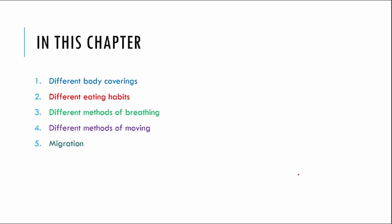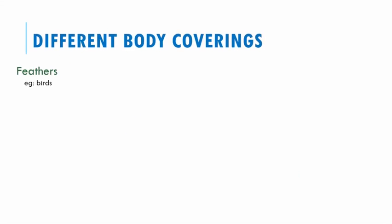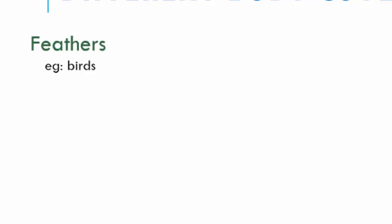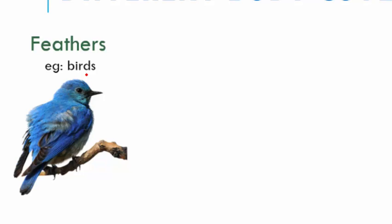Let's start with the first one, which is different body coverings. Now when you look at different body coverings, can you think of what all could be the different body coverings that animals have? The first one would be feathers. Can you think of anything that can have feathers? Yeah, it's obviously the birds. Birds will have feathers.